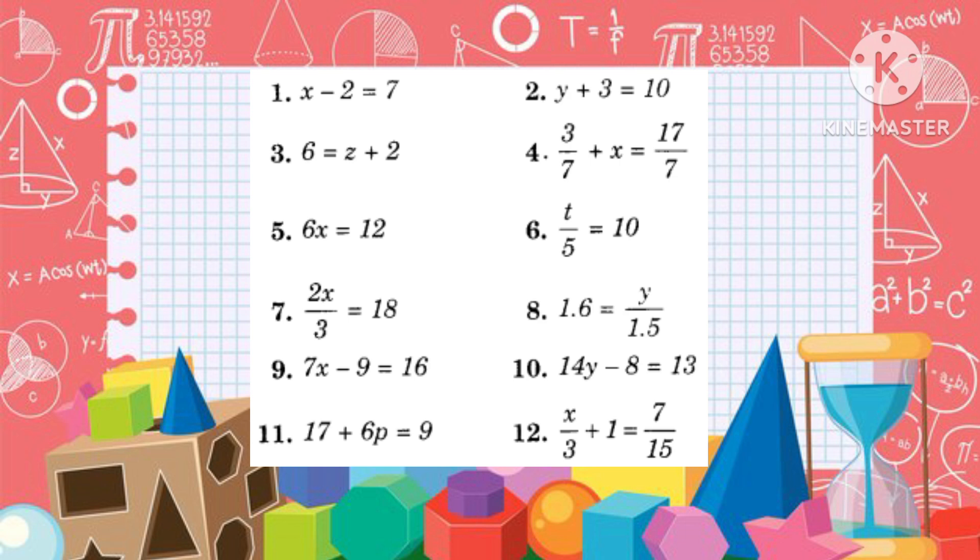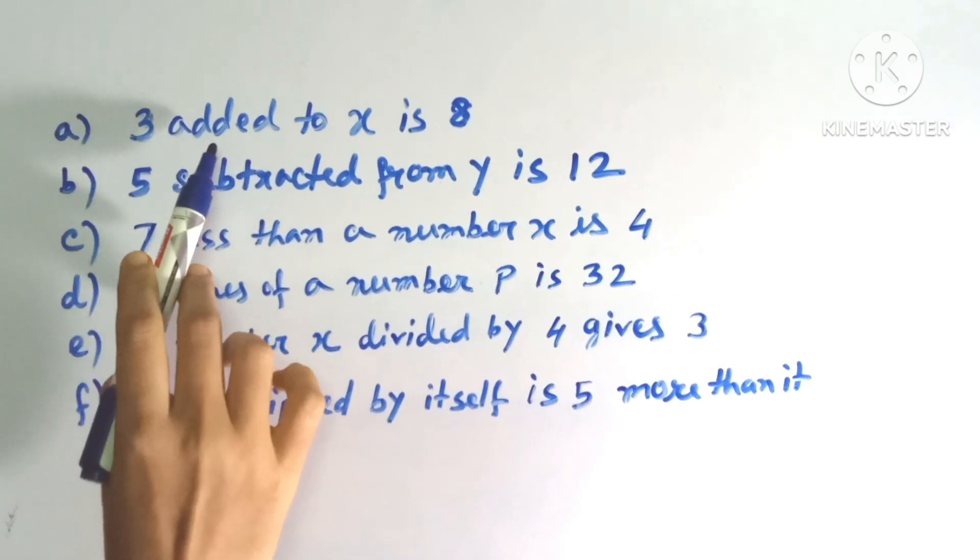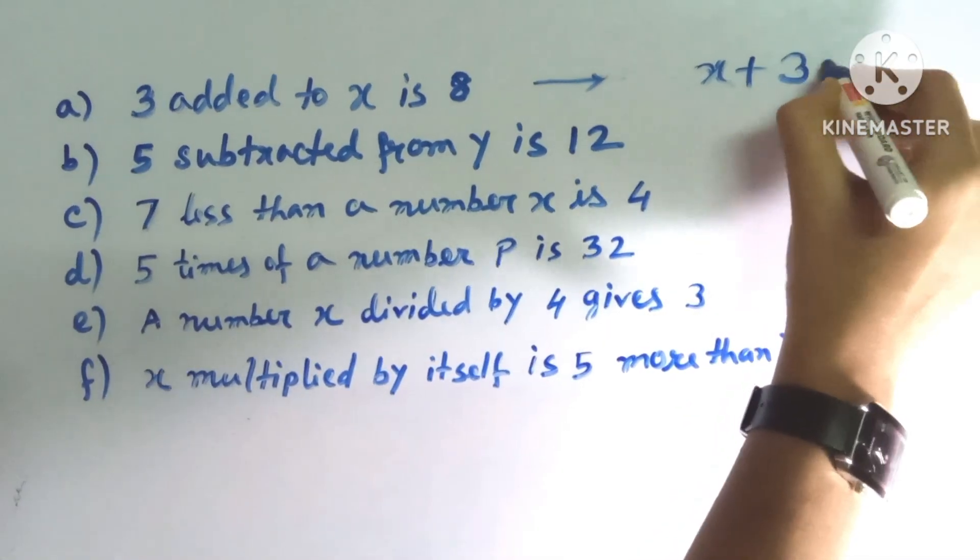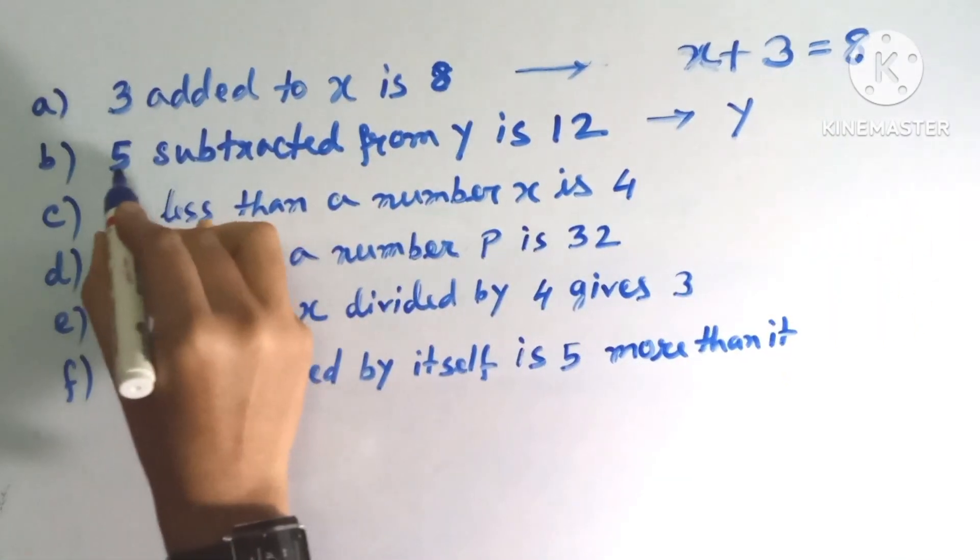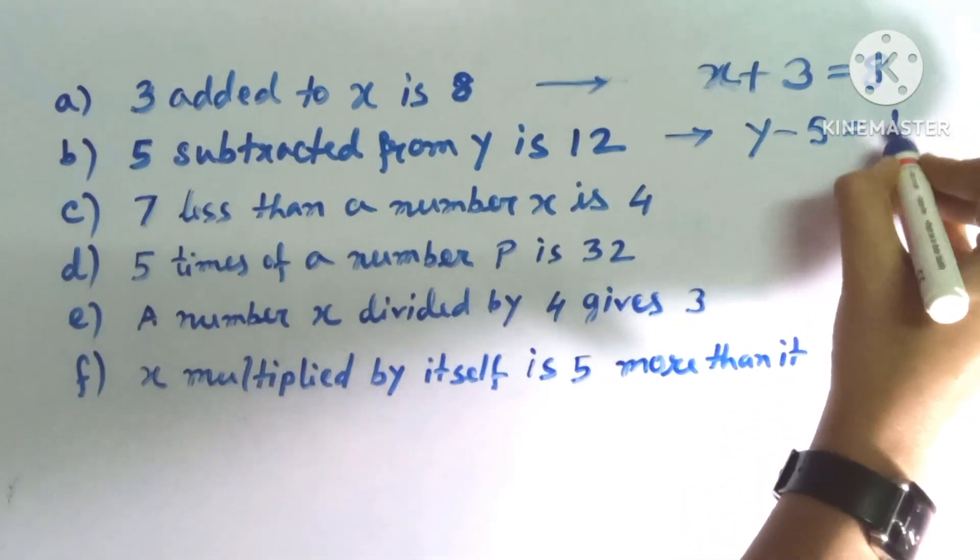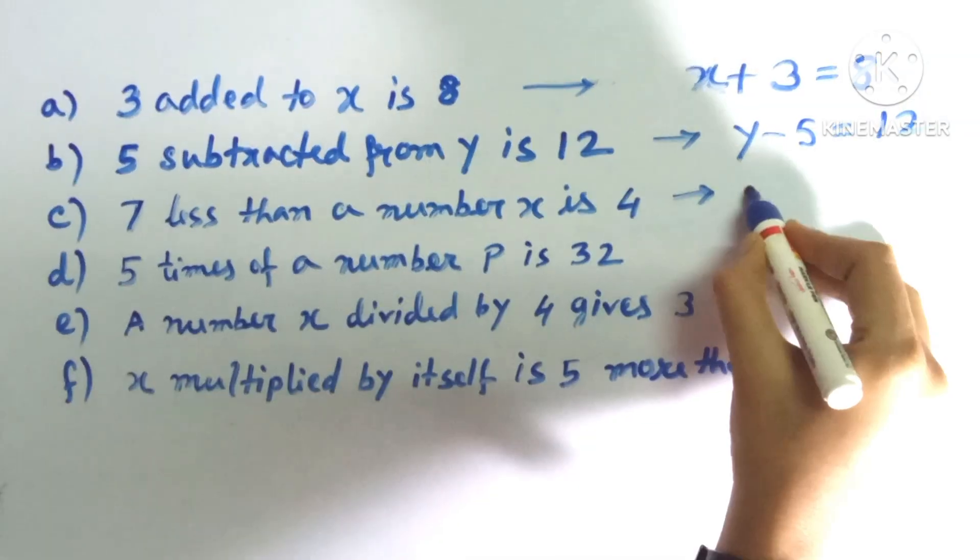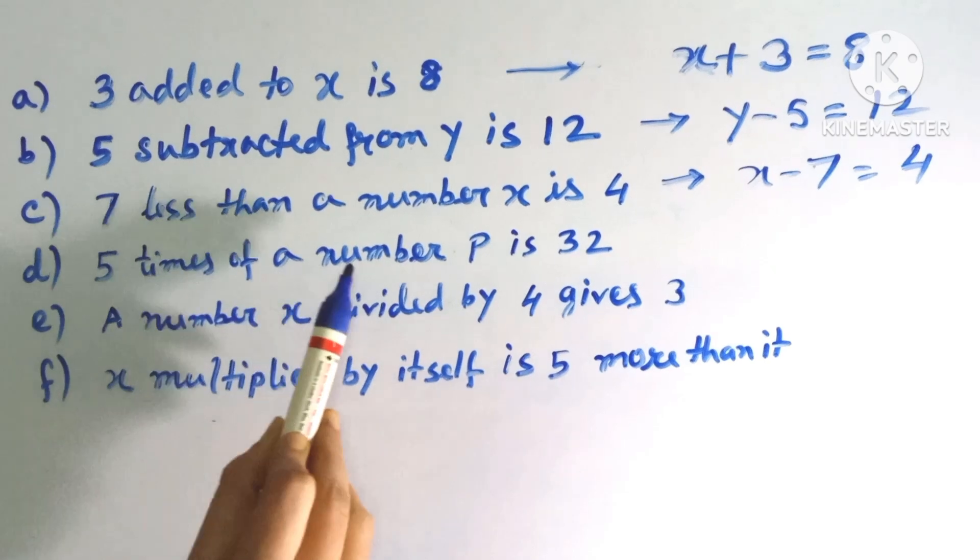Now let's see how to make some linear equations in one variable according to the given statement. Here are some given statements. First: 3 added to X is 8, the equation will be X plus 3 equals 8. Second: 5 subtracted from Y is 12, the equation will be Y minus 5 equals 12. Third: 7 less than a number X is 4, equation will be X minus 7 equals 4.